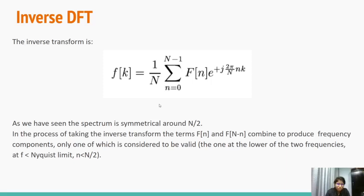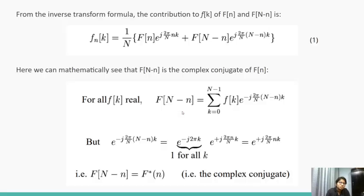That is, the one at the lower of the two frequencies, at f less than the Nyquist limit. From the inverse transform formula, the contribution to f[k] of capital F[n] and capital F[N-n] is given by this formula. This is nothing but the simplification of the summation formula given earlier.